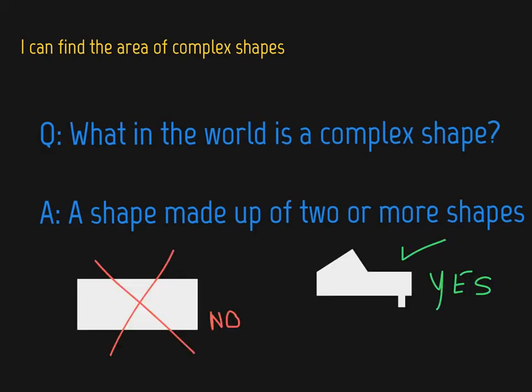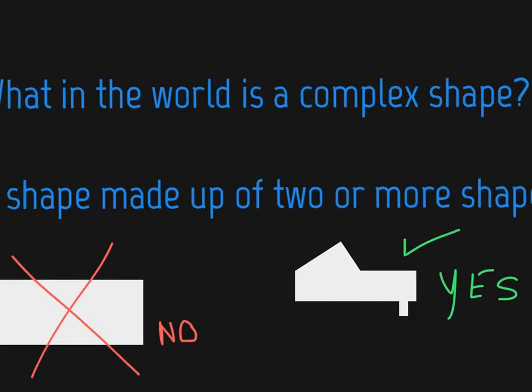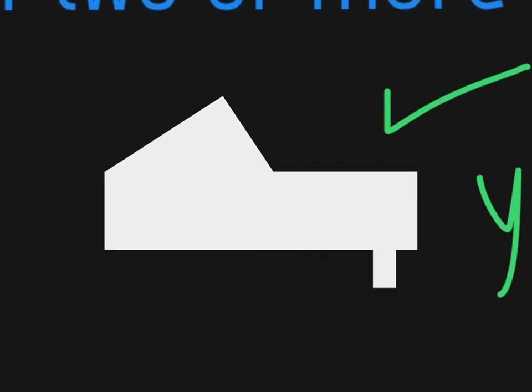Let's look at an example. I have two shapes drawn on the screen here. On the one on the bottom left, we don't consider this a complex shape because it's just a rectangle. There's only one shape. But the one over here, we can call this a complex shape because we can divide this shape into more than one shape.